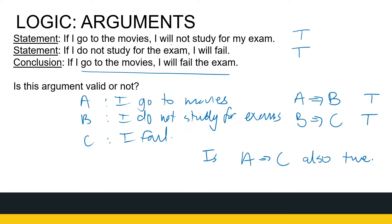Using our common sense with these English sentences: I go to the movies, I will not study; I do not study, I will fail — so if I go to the movies, then I will fail. This is definitely true, because going to the movies means I won't study, and if I don't study, I fail. But now let us see how we're going to do this mathematically.